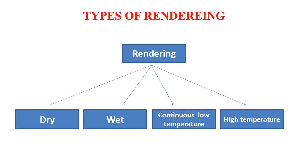Now let us understand the types of rendering. Rendering is a process for heating and melting fat, and separation and preparation of other meals. It can be done by different methods. One is dry rendering, where steam is used for heating and cooking but never comes in contact with the raw materials. Another is wet rendering, where steam is directly injected along with the materials, helping in melting fat, cooking, and sterilization. The third method is continuous low temperature rendering, where modern machinery processes materials through different stages continuously at a very low temperature, giving better quality proteins and less nutrient damage. There is also high temperature continuous rendering, where the same continuous process operates at a higher temperature.